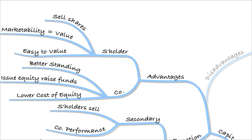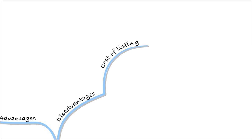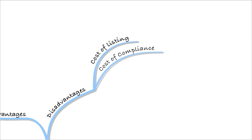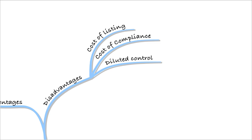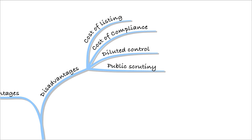There are however some disadvantages to the company of listing. These include the cost of doing that — we talked about how high those costs were — and the cost of compliance is high as well. You'll also dilute your control by bringing other shareholders into the business, so you won't have as much control as previously. And lastly, there will be public scrutiny of the share once it's listed.